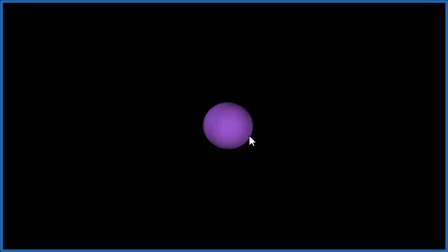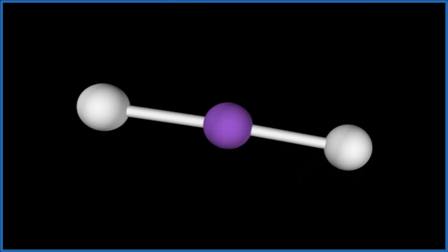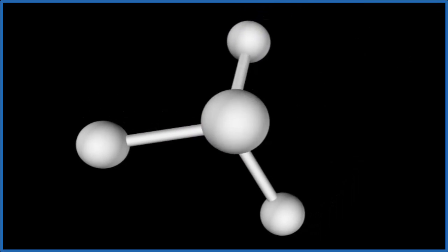So the purple, that's our central iodine atom. We had IF5, so we had one, two, and you can see they're spreading out, three, four, five.